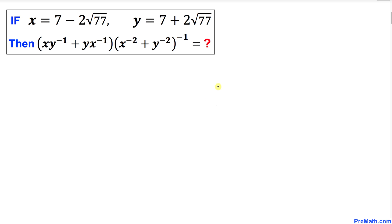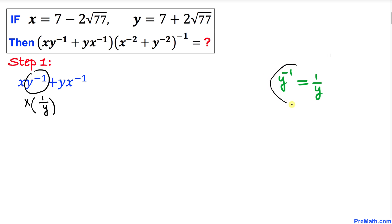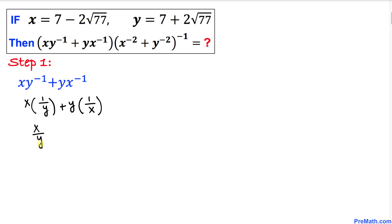Let's get started with the solution. For the first step, let's focus on the first parentheses: xy⁻¹ + yx⁻¹. This can be written as x·(1/y) + y·(1/x), which simplifies to x/y + y/x. Let's add these two fractions using the cross-multiplication method.